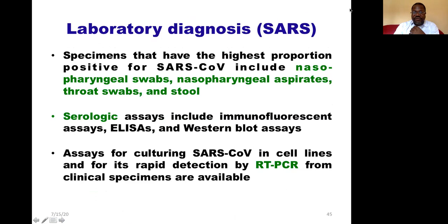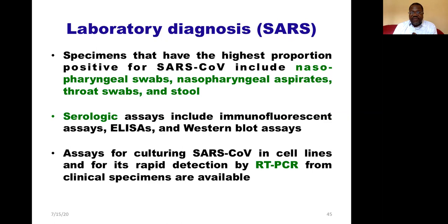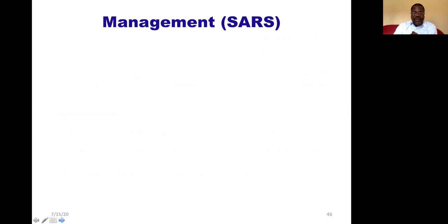For diagnosing SARS, specimens with the highest proportion of positive SARS-associated coronavirus include nasopharyngeal swab aspirate or throat swab, and in some cases it was found in patient stool. Serological assays include immunofluorescence assay, ELISA, and Western blot. For culturing SARS-associated coronavirus in cell lines and rapid detection, we can use real-time PCR directly from clinical specimens.